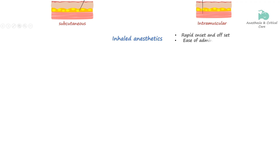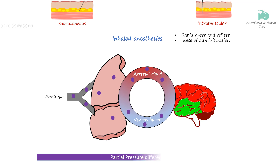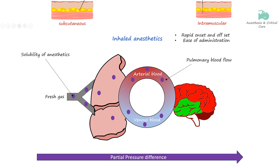Inhaled anesthetics are among the most commonly used anesthetic agents in clinical practice due to their rapid onset, ease of administration, and the ability to control the depth of anesthesia. They are absorbed through the lungs very rapidly. After administration, the anesthetic diffuses from the alveoli into the pulmonary capillaries and then into the bloodstream. The driving force for this diffusion is the partial pressure gradient between the anesthetic in the alveoli and in the blood. The quantity of anesthetic taken up depends upon its solubility in blood and the pulmonary capillary blood flow. Once in the bloodstream, these agents are transported to the brain where they exert their anesthetic effects.